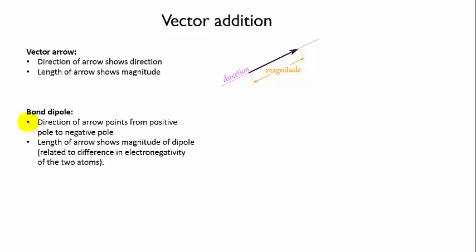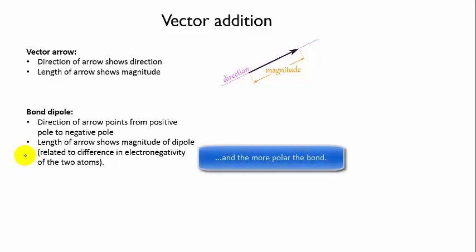For us, the vector arrow represents a bond dipole, so the direction of the arrow shows you the direction of the dipole, which will be along the length of the bond and pointing towards the negative end, while the length of the arrow shows you the magnitude of the dipole. The larger the difference in the electronegativity of the two atoms in the bond, the larger the separation of charge and therefore the larger the dipole.